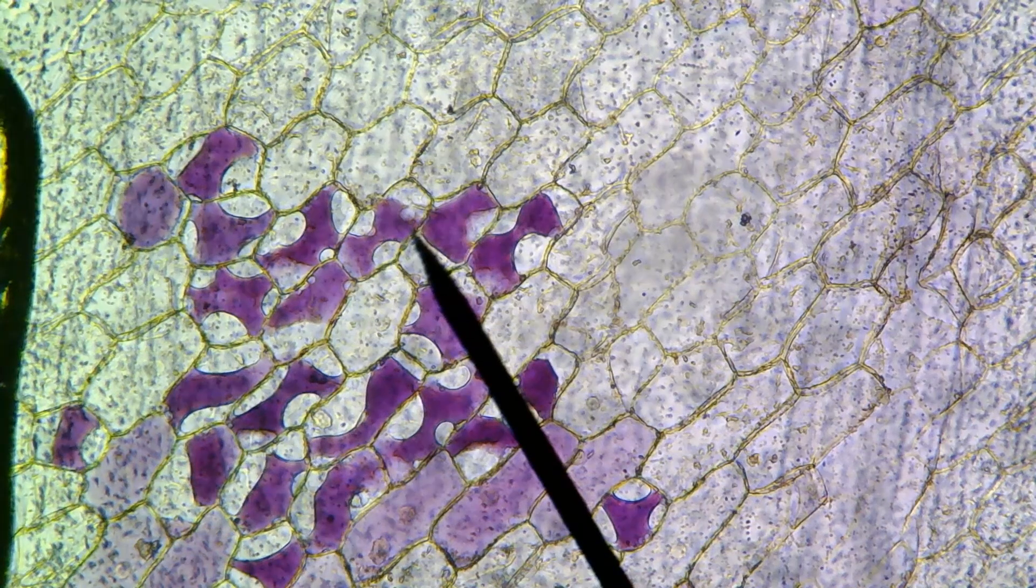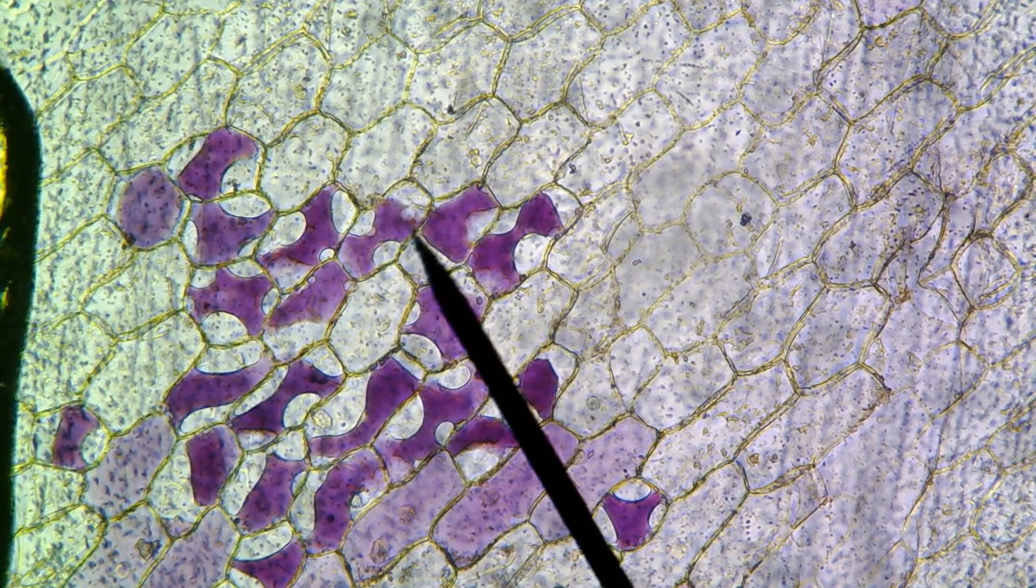Remember again, the cell wall maintains the shape of the cell. It's that rigid structure. Those are the dark lines that you see around. And then the plasma membrane just shrinks and that's where you see the white color surrounding the purple.